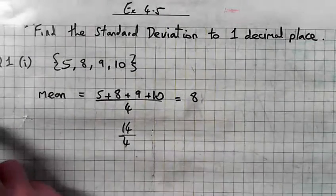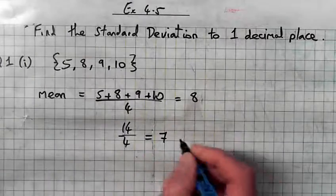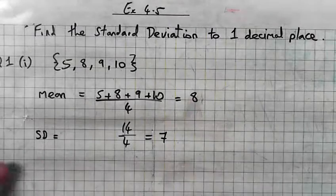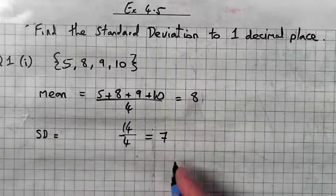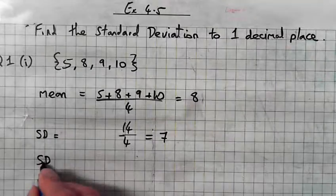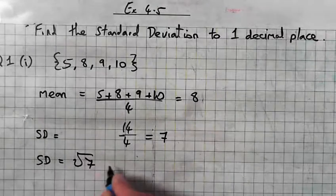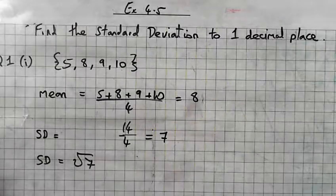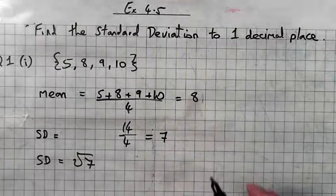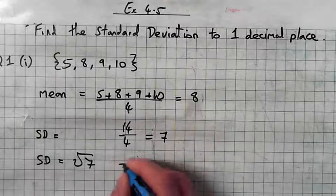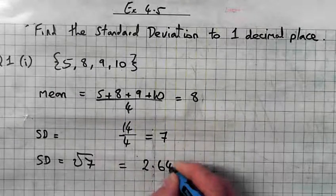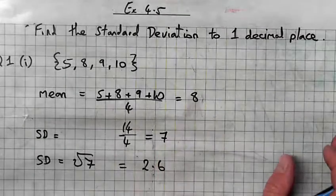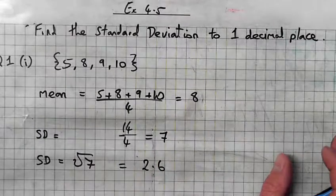14 over 4 is 7. Alright, and to get the SD, standard deviation, which I should have wrote there, to get the standard deviation you get the square root of 7. The last step, and square root of 7 is 2.604.